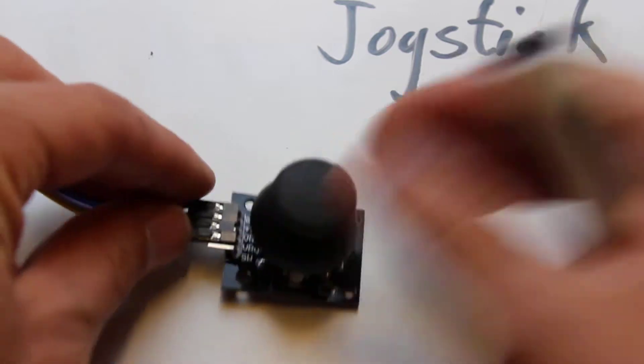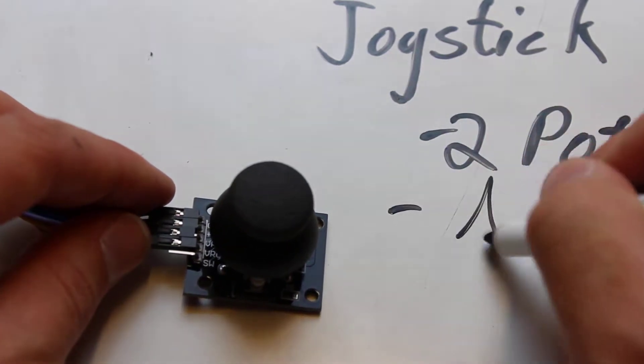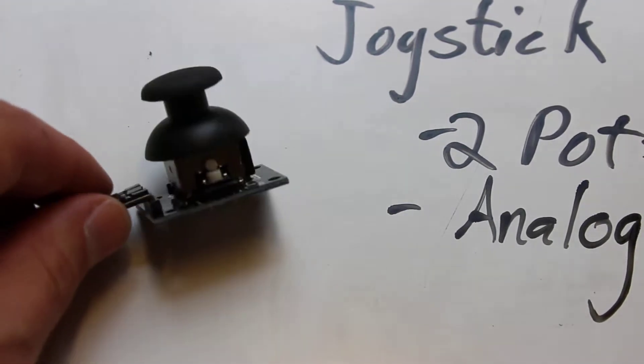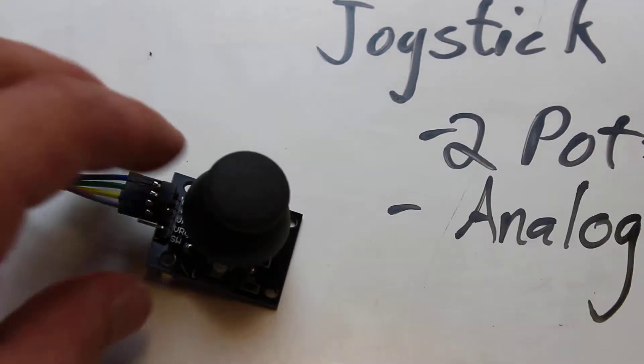The VRY and VRX are basically the analog outputs. So this is an analog sensor. You need some pin on your Arduino that can read analog signals in order to read this. You actually need two pins for it.